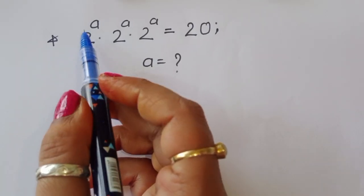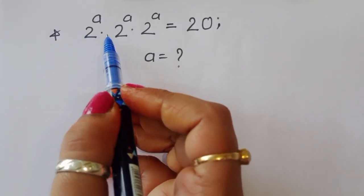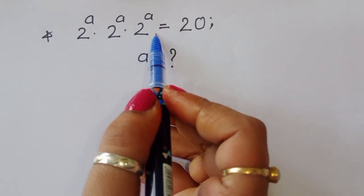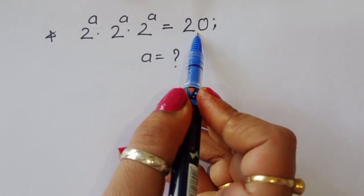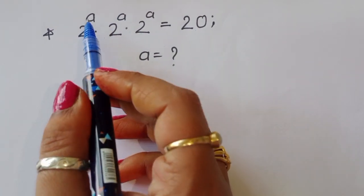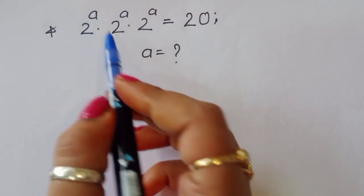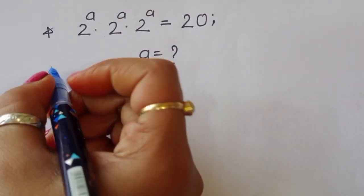The question is: given 2 power a times 2 power a times 2 power a is equal to 20, we have to find out the value of a. How can we find out the value of a? Let's see the solution.